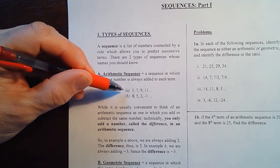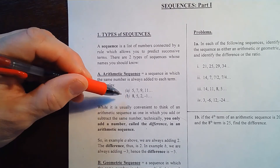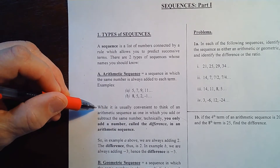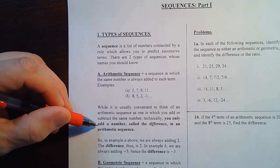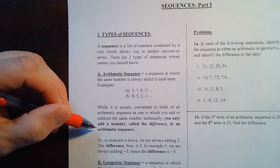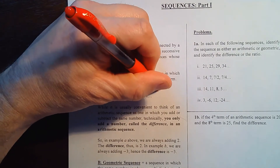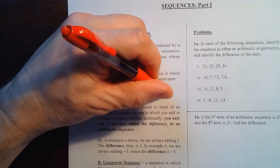Examples a and b: in a, look at those numbers — 5, 7, 9, 11 — you can predict what's going to come next: 13, 15, you're adding 2. In b, we have 8, 5, 2, negative 1. It looks like we're subtracting 3, but technically in an arithmetic sequence you only add a number, which is called the difference. In example a, the difference is 2; in example b, we're always adding negative 3, so the difference is negative 3.